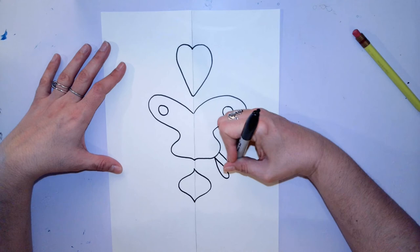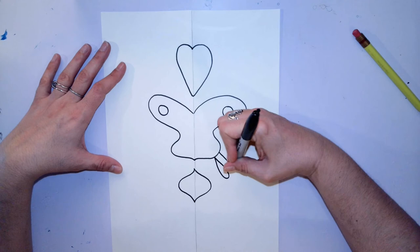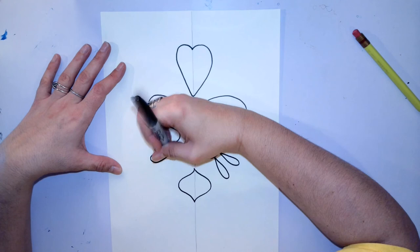I'll add some smaller shapes that come off of here. So I'm just creating my design using different shapes to start. And then after I figure out all the shapes that I want, I could go back and add some more details.